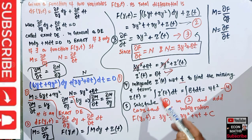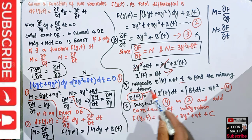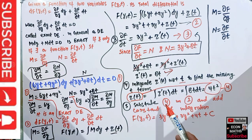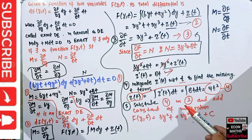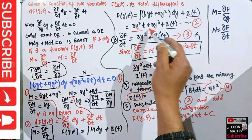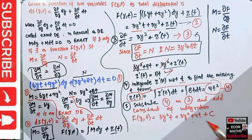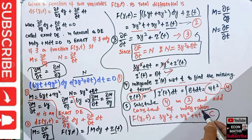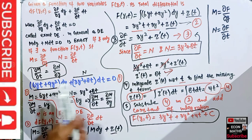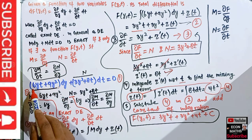We got z(t) = 4t². Substituting this back into our expression for f(y,t), and adding the constant of integration, the solution of this exact differential equation is f(y,t) = 3y²t + 3y³ + 4t² = c.